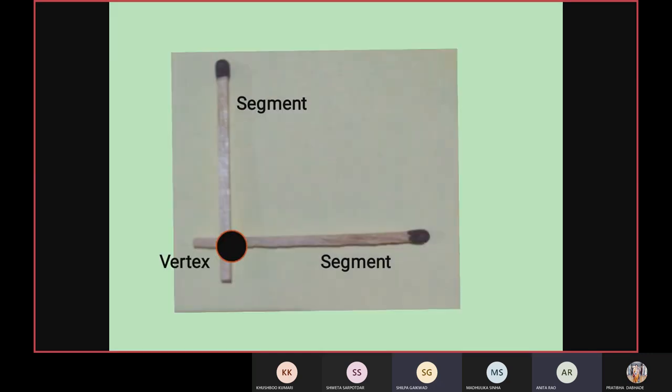So imagine these two matchsticks as segment 1 and segment 2. When we will join these two segments at one end, then it forms a shape. Can you tell me what type of shape it is looking? Imagine a shape from the mathematics subject. It is a geometrical shape. Right angle. Yes, right, good. It is a right angle. So here you can see the word vertex. Whenever two matchsticks or two sticks we will join at one end, that intersection point is called a vertex and the two rays are called segments.